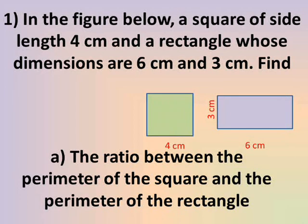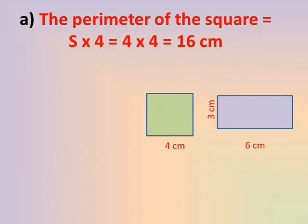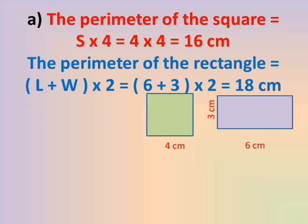The ratio between the perimeter of the square and the perimeter of the rectangle. First we need to find the perimeter of the square, then the perimeter of the rectangle. The perimeter of the square equals side multiplied by 4. The side is 4 cm, so 4 × 4 = 16 cm. The perimeter of the rectangle equals (length + width) × 2. Length is 6 cm and width is 3 cm, so 6 + 3 × 2.